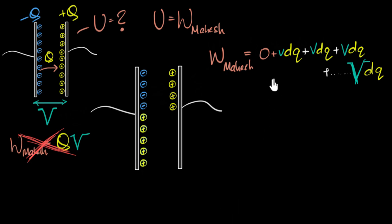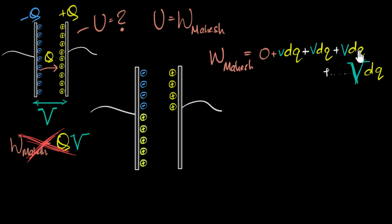Can you see why the total work done is not just Q times V? The main reason is that not all the charges moved through the full potential difference capital V. Only the very last DQ went through the full V, while the rest went through smaller potential differences, so the work done for those charges is smaller. Therefore, the total work done should be less than QV.